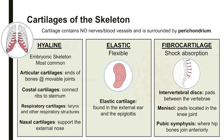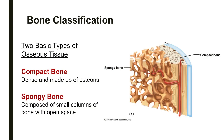The 206 bones of the adult skeleton are composed of two basic kinds of osseous tissue that differ in their texture. Compact bone is dense and made up of organizational units called osteons. Spongy bone is composed of small columns and lots of open space.